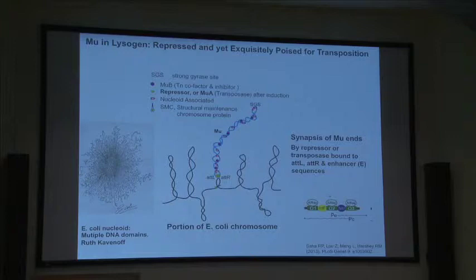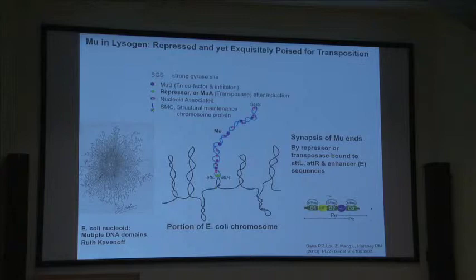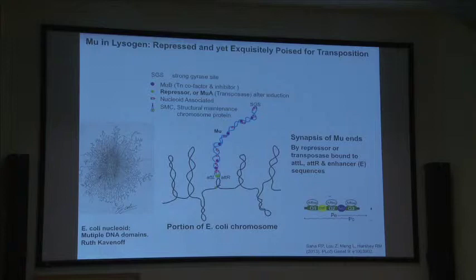For those of us who love phage regulatory mechanisms, I was pleased to see a very recent paper from Rasika Harshi's group arguing that mu itself in the prophage state is really primed — poised between lysogeny and replicative transposition — in part because of the way it forms plectonemic coils inside the bacterial chromosome where the attachment sites are tied together by either mu repressor or the transposase. A lot of this is driven by a strong gyrase binding site that Marty Pato had identified and held together by leaky expression of mu-B protein, another transposition-associated protein, plus some host factors.